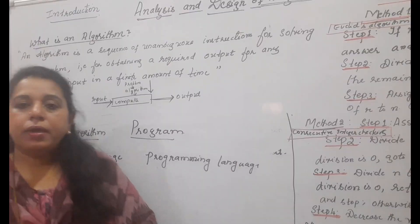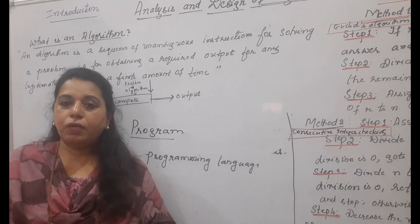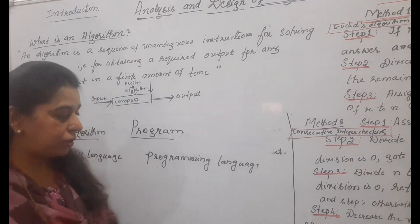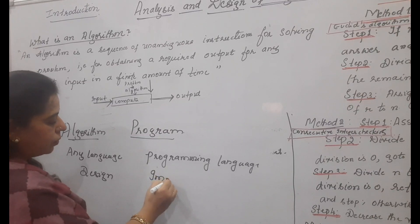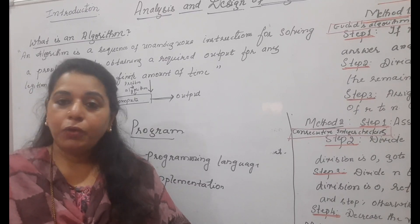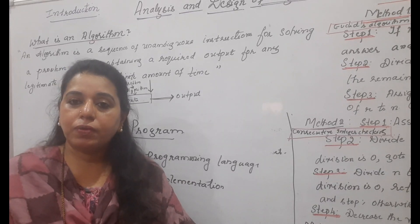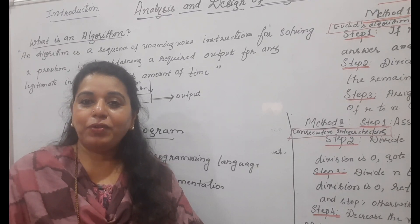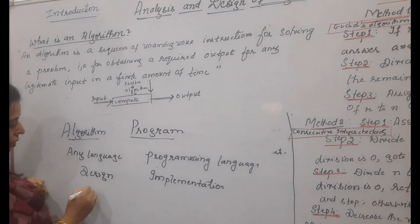Another important difference: an algorithm is like a design. When you are constructing a building, you first make a design — a sketch with dimensions, a plan. Similarly, the steps you write in an algorithm are like the design of a project, and the program which gets executed is like the implementation of that project. While writing an algorithm you are not worried about the computational device — you can write it on paper, in Notepad, in MS Word. You don't have to worry about the machine's software or hardware specifications.